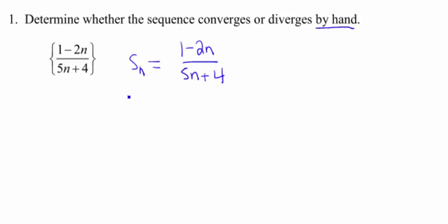If we look at the limit as n approaches infinity of 1 minus 2n over 5n plus 4. This is where we gotta dig back into our Calc 1 knowledge. If I look at the numerator, what's gonna happen as n gets really big? This is gonna get really big. What happens to the denominator as n gets really big? It's also gonna get really big. Does anybody remember what happens when we have infinity over infinity?